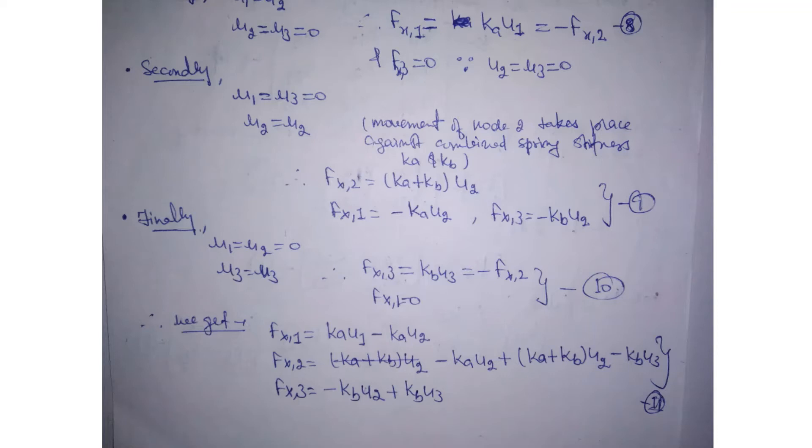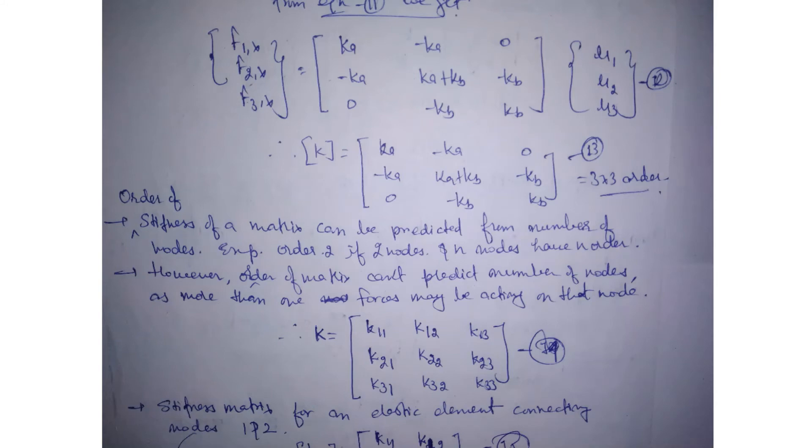Now we will write these three in matrix formula as we did in the previous part. Here Fx1, Fx2, and Fx3, here we have Ka, minus Ka, 0, then minus Ka, Ka plus Kb, minus Kb, then 0, minus Kb, and Kb. Here we have all displacements. If we show the stiffness matrix, then we have this matrix 3 into 3 order.